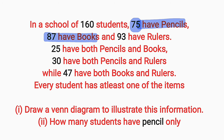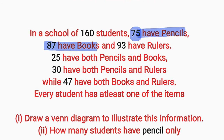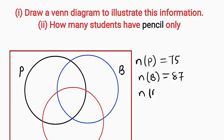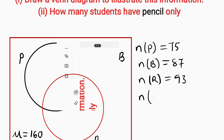87 students have books. 93 have rulers. 25 students have both pencils and books — here we are talking about the intersection between P and B, that is pencils and books. So the number of students in P intersection B is 25.